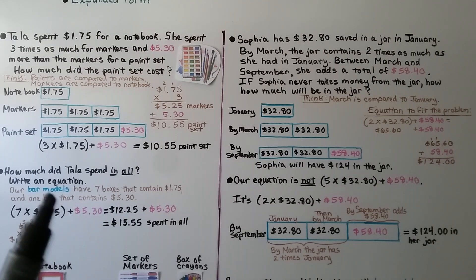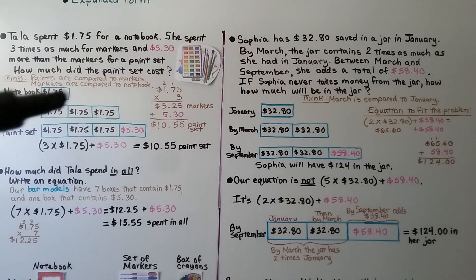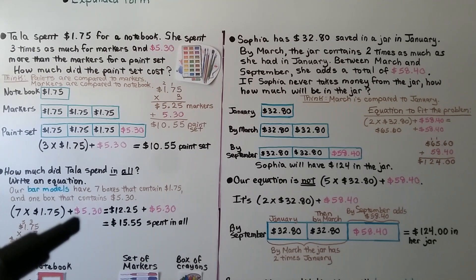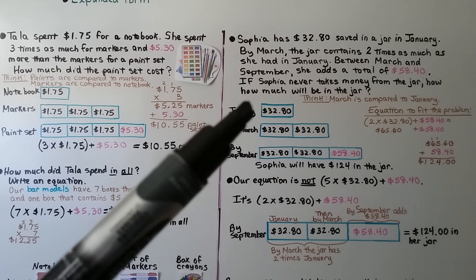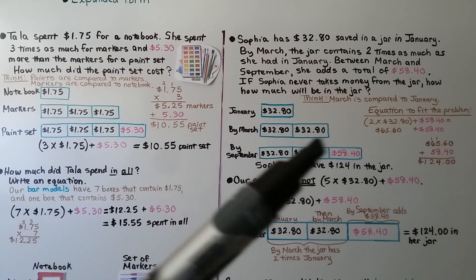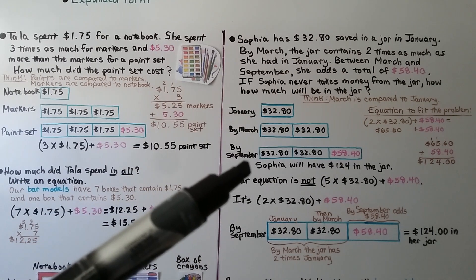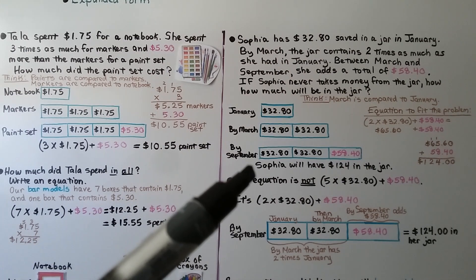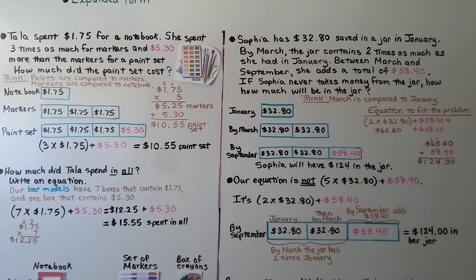This problem differs from the one with the notebook, markers, and paint set, where we knew the price of each item and needed to find the total — doing 7 times $1.75 and adding $5.30. For the Sophia problem, January's amount is replaced by March's amount, which is 2 times January. So January's amount is gone — March represents the new jar total. Similarly, March is gone by September because we represent it as the March amount plus the $58.40 added. Do you see the difference between the two problems?